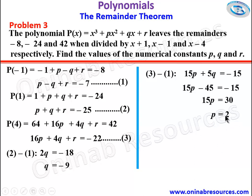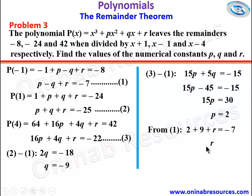Since we have p and q, we substitute into equation 1 to find r. From equation 1: 2 plus 9 — since q is negative 9, it becomes positive 9 — plus r equals negative 7. So r equals negative 7 minus 11, which gives negative 18. We have succeeded in finding p equals 2, q equals negative 9, and r equals negative 18.